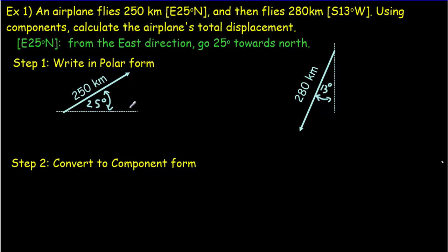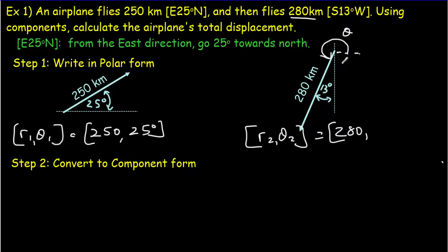So let's go back and solve the problem. So I've drawn the two vectors. This one is east, 25 degrees north. And this other vector with a length of 280 kilometers, for that one you start at south and work 13 degrees towards the west. So I've drawn the two vectors. What I want to do now is to write them in polar form. So I'll have an r1 and a theta1, simply equal to the length, 250, and the angle, polar angle, 25 degrees. And then there will be an r2, theta2, which will be the length of that vector, 280 kilometers. And the polar angle, theta here, is going to have to be equal to 270 minus 13 degrees, or 257 degrees. So this will be 257 degrees as a polar angle.